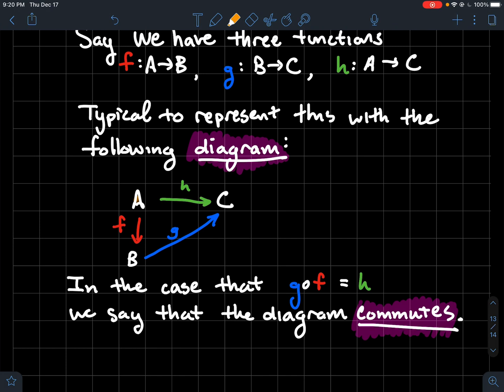So in general with a diagram, you don't have a relationship between the functions that are in the diagram. But if the diagram commutes, then that does assume that there's a relationship between the functions in the diagram. And in particular, if you have functions that start in the same place and land in the same place, then those functions have to be equal, or the composition of those functions has to be equal. So again, in my case, g composed with f is the same thing as h.